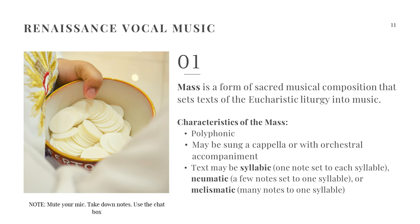There are different vocal music forms from the renaissance period. One of them is what we call mass, which is a form of sacred musical composition that sets text of the eucharistic liturgy into music. The liturgy used inside the church was set to music, and that is what we call mass. There are different characteristics of the mass: first, it is polyphonic, meaning there are two or more melodies sounding together, like a choir with melody, second voice, third voice, and fourth voice.